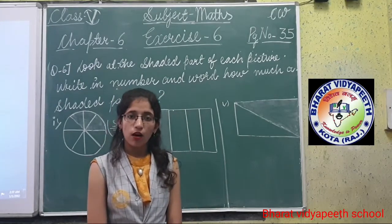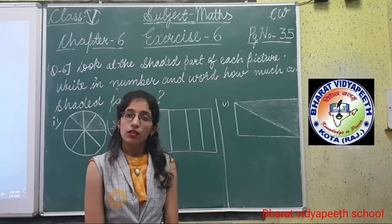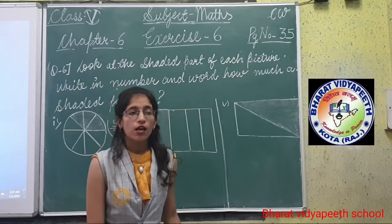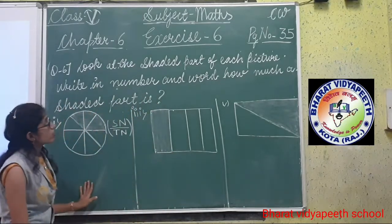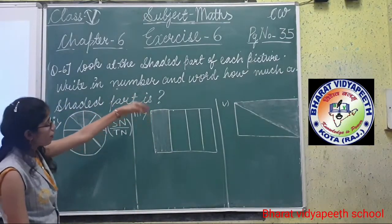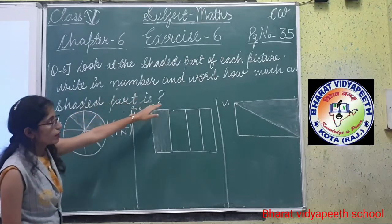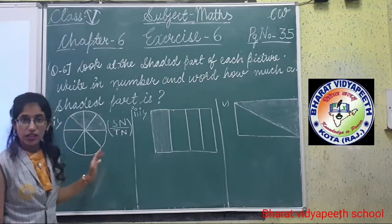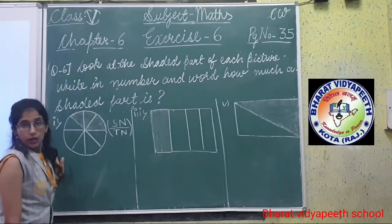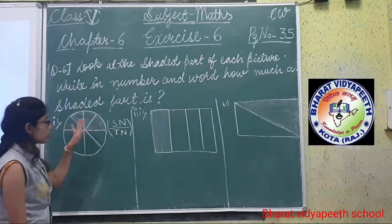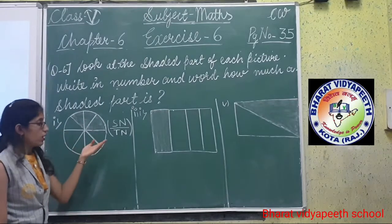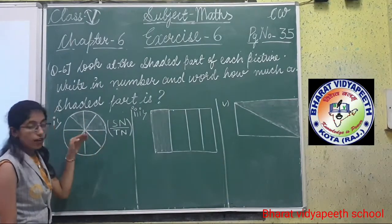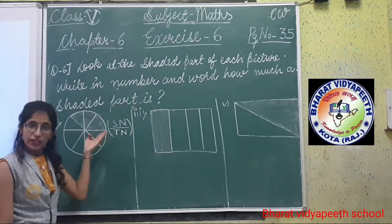Now all of you take out your books and copies for writing down your answers. Clear, children? Now see question number 6. Look at the shaded part of the picture. Write in number and in word how much of the picture is shaded. Now write the total number of parts on the denominator side and the shaded part on the numerator side. Clear, children?